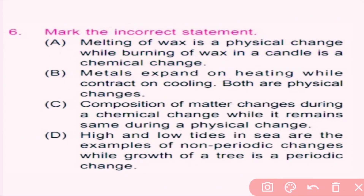Question number six: mark the incorrect statement. Option A — melting of wax is a physical change while burning of wax in a candle is a chemical change. Melting of wax is a physical change because it does not create a new substance, and once wax is burned it gets converted to a new substance, so burning is a chemical change. Option A is correct. Option B — metal expands on heat while contracts on cooling, and both are physical changes — is also correct, as no new product is formed in either case.